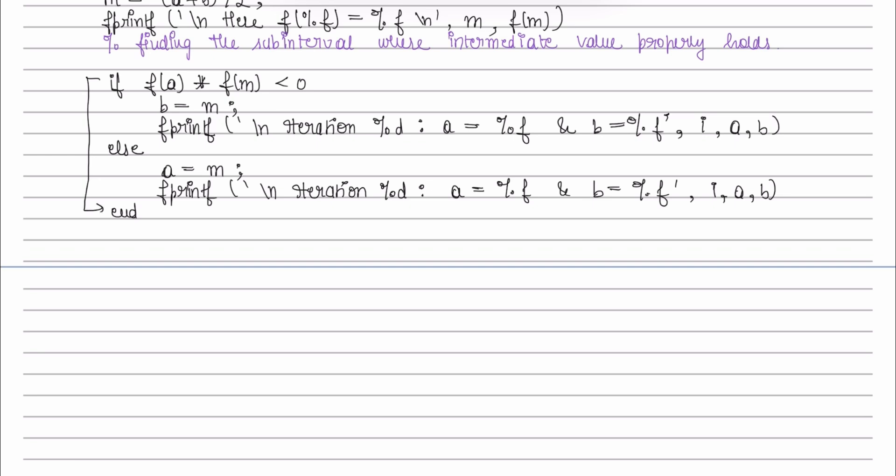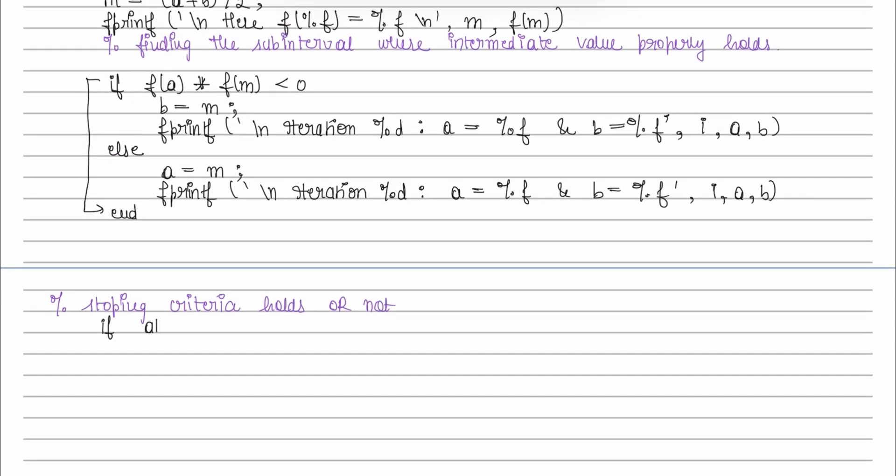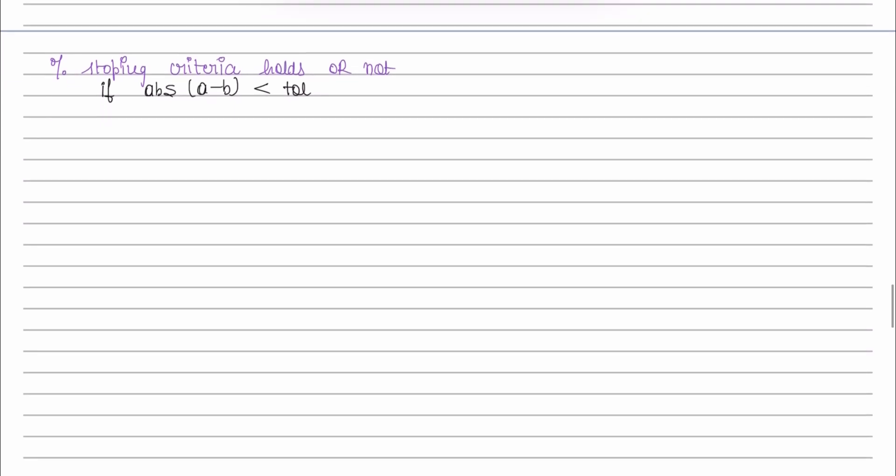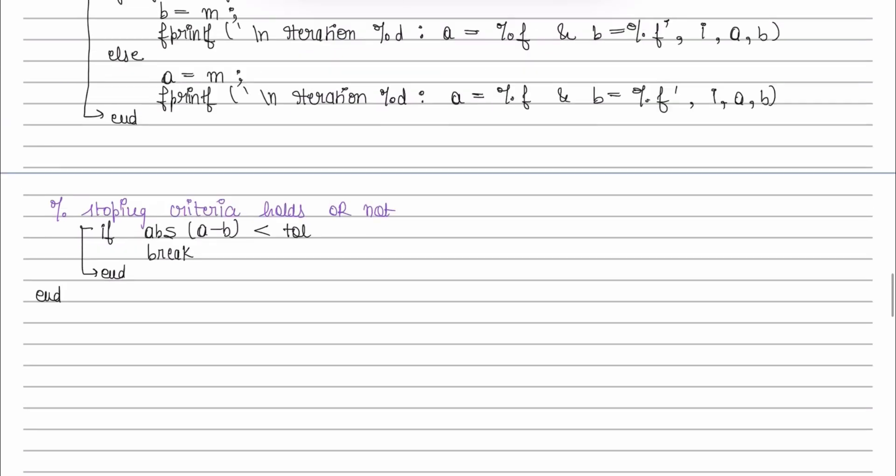After finding the interval, we next have to check if the stopping criteria holds or not. For that we will again use an if condition where the absolute value of a minus b should be less than the tolerance we have defined earlier. And if this condition holds then we will break this loop and get out of this code, otherwise we will continue this for loop again.